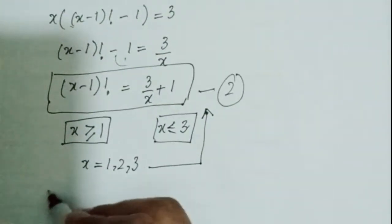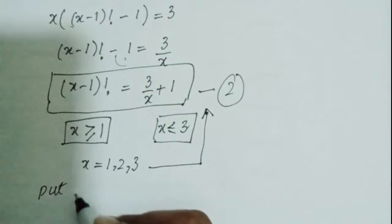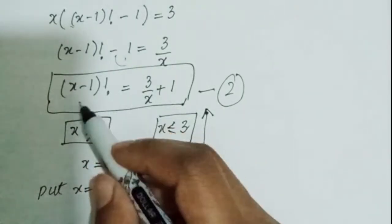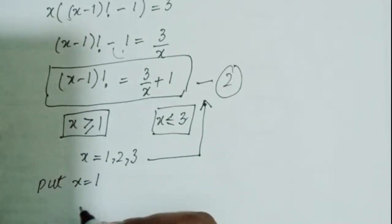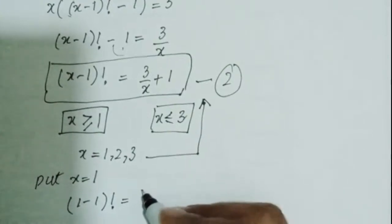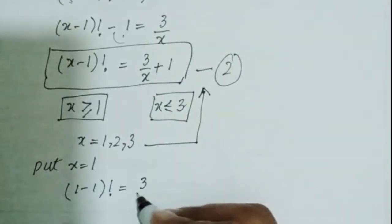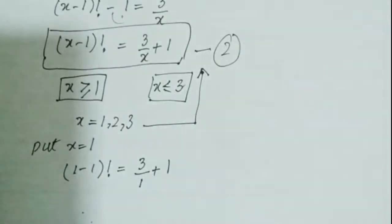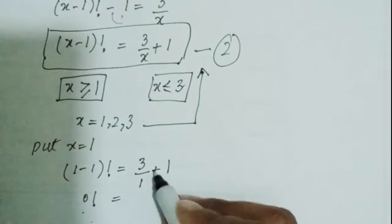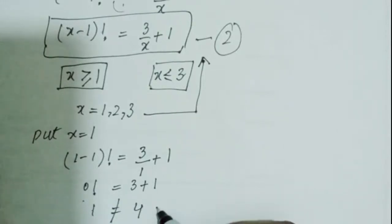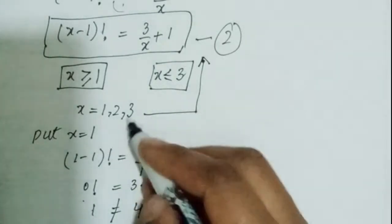Let's check these values one by one in equation 2. For x equals 1: (1 minus 1) factorial equals 3 over 1 plus 1, which gives 0 factorial equals 1 equals 4. Since 1 does not equal 4, this is impossible. So x equals 1 is not a solution.